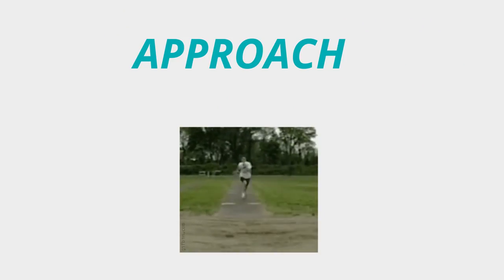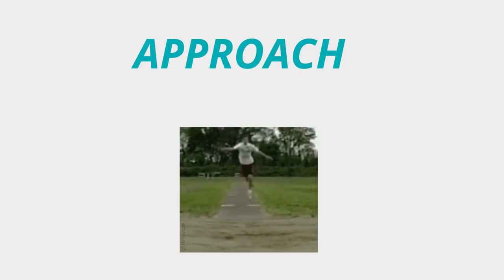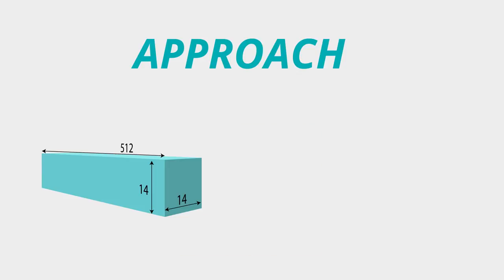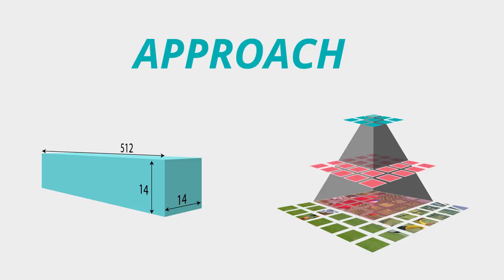Now let's jump onto the approach. Take the initial feature map obtained from the last activation layer of Conv4 in ResNet50. This is 14 x 14 x 512.